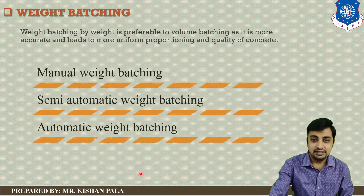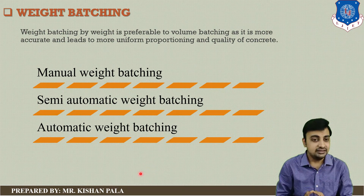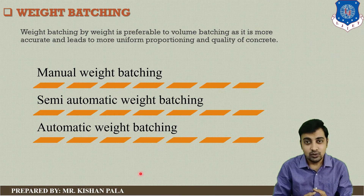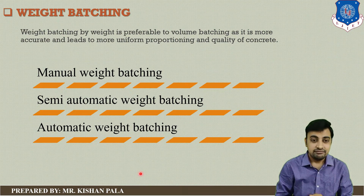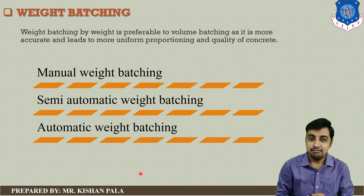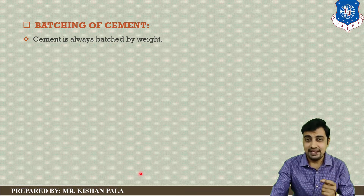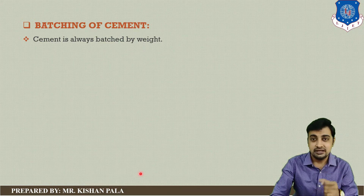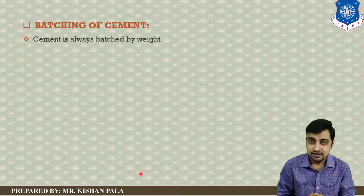Now let us discuss weight batching. Batching by weight is preferable over volume batching as it gives more accurate and uniform proportioning and concrete quality. In large construction projects and accurate work, weight batching is required. Weight batching can be done in three ways: manual weight batching, semi-automatic weight batching, and automatic weight batching. Cement is always batched by weight because the cement bag has 50 kg of mass.